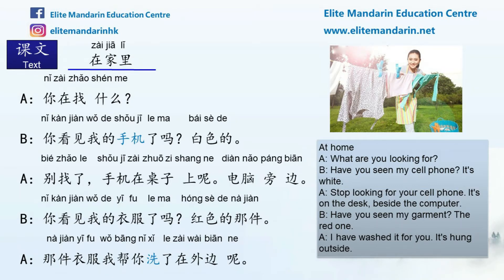I will play this recording one more time. Please listen carefully. 课文4 在家里 — Text 4: At Home. 你在找什么？你看见我的手机了吗？白色的。别找了，手机在桌子上呢，电脑旁边。你看见我的衣服了吗？红色的那件。那件衣服我帮你洗了，在外边呢。